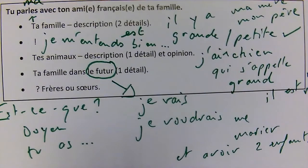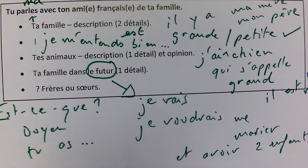'Super, et dis-moi, est-ce que tu as des animaux? Décris ton animal s'il te plaît.' 'Oui, j'ai un chien qui s'appelle Pablo.' 'Oh super, il est sympa?' 'Oui, il est mignon, très mignon.' 'Moi j'ai un petit chat qui est très méchant!'